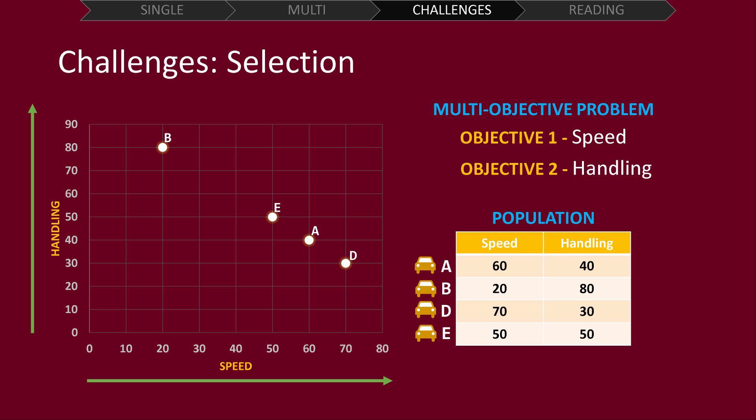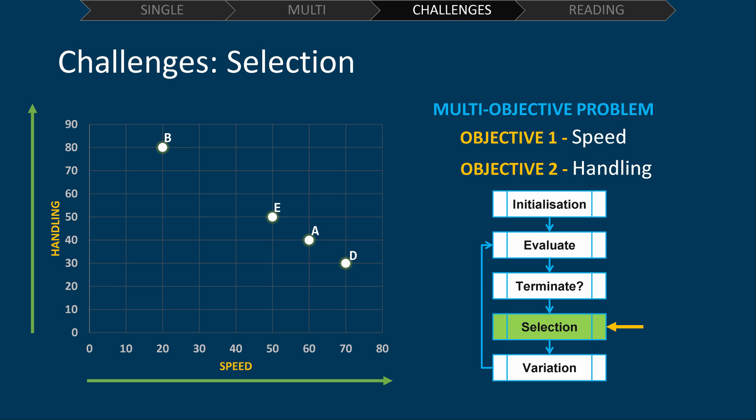For example, we may know the decision maker will not accept a vehicle design which offers handling lower than 40. Ultimately, we have to present this population of solutions to an expert. This is so they can make an informed decision using their knowledge of the problem. There are many approaches to reducing population sizes by selecting solutions based on some scheme, but these will still not tell you which solution is the best.